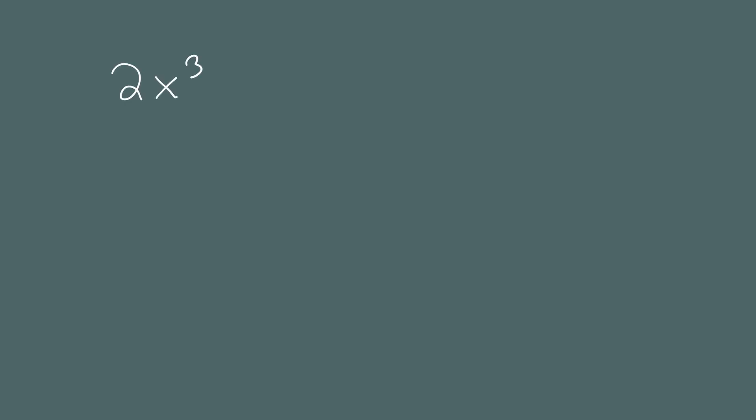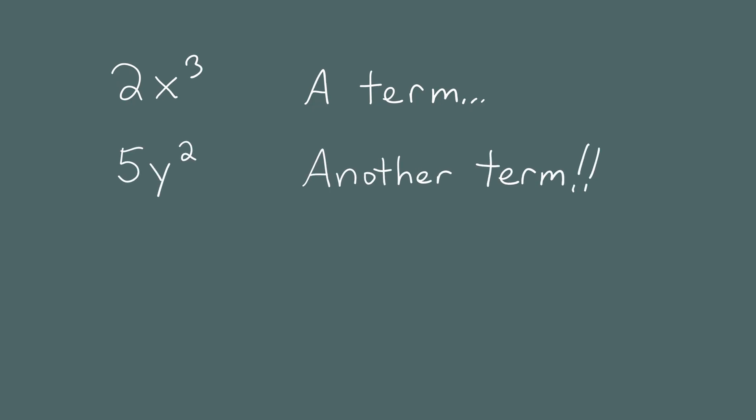A term is a number times some variables raised to various powers. 2x cubed is a term — the number is 2, the variable part is x cubed, and they're multiplied together. 5y squared is another term — the number is 5, the variable is y, it's raised to the second power, and everything is multiplied together.